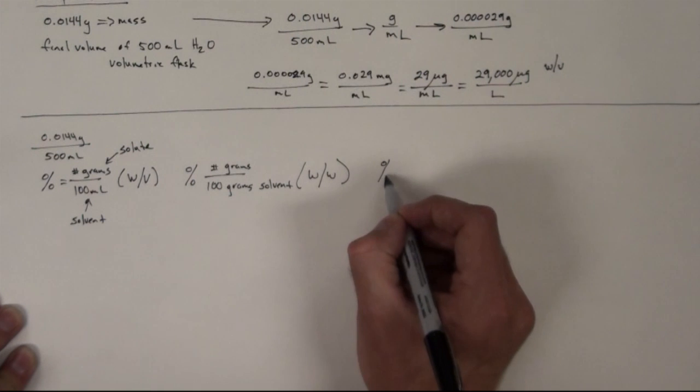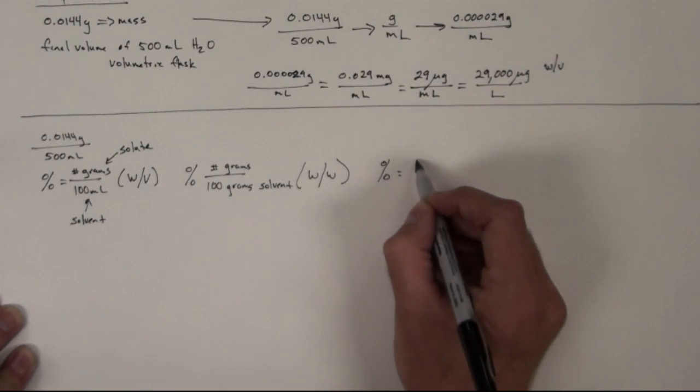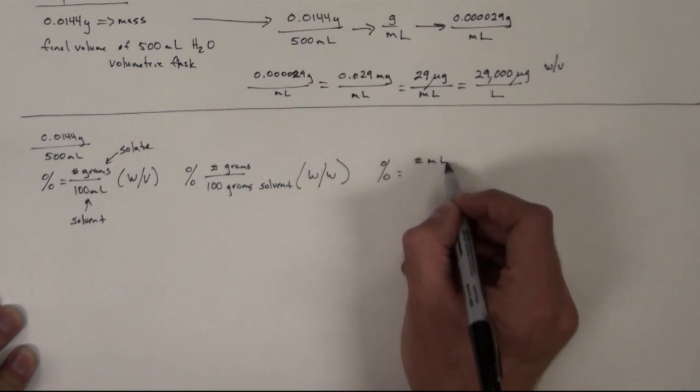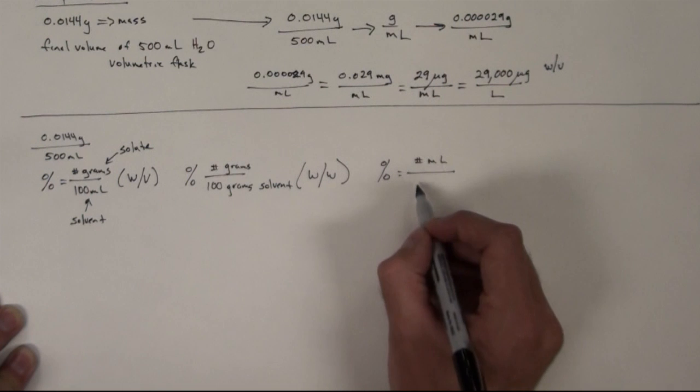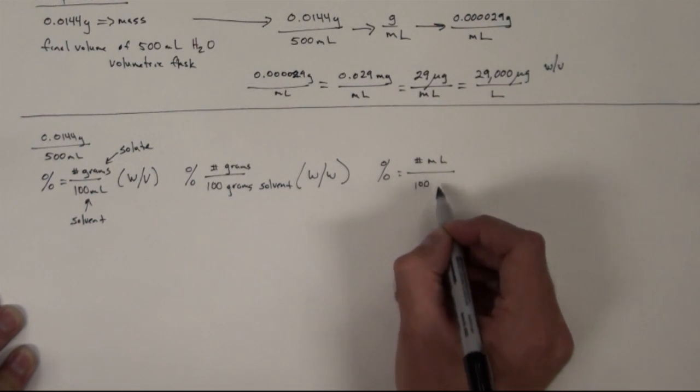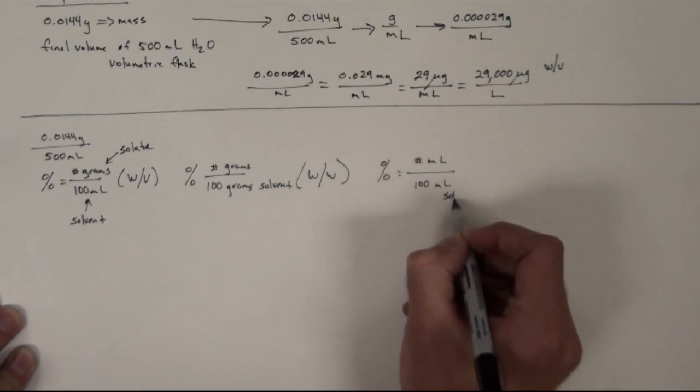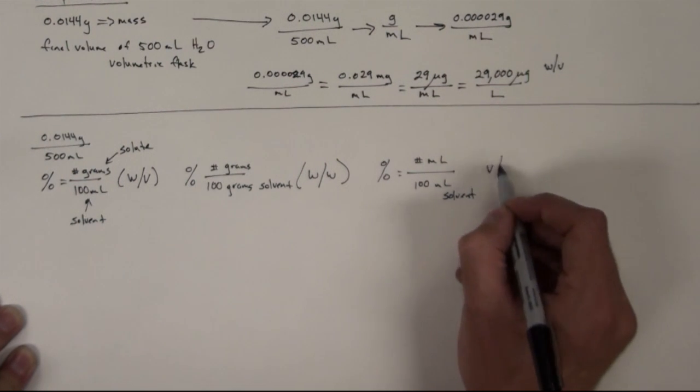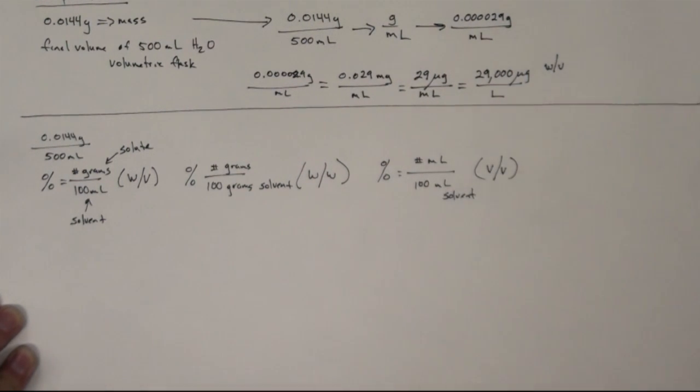Another way to do percentage is number of milliliters per 100 ml solvent. And this would be a volume volume percentage.